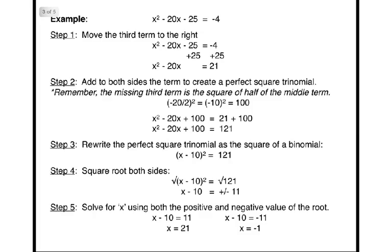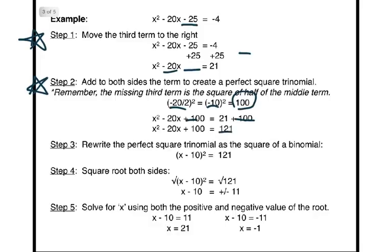Here's another example: x squared minus 20x minus 25 equals negative 4. The first step is always to move the third term to the right. So I add 25 to both sides of the equation and leave a space: x squared minus 20x equals 21. Now we add to both sides the term to create a perfect square trinomial. The missing third term is the square of half of the middle term. The middle term is negative 20, so half of negative 20 is negative 10, and then you square it, and it's 100. So we add 100 to both sides, giving us x squared minus 20x plus 100 equals 121.